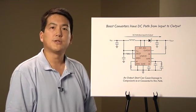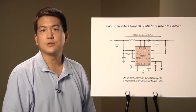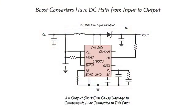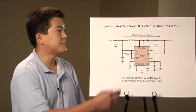These new parts also feature innovative fault protection features. In a traditional boost converter, a DC path exists between the input and output nodes. When a short circuit occurs on the output, the current in this path can increase uncontrollably and cause one or more components in this path to fail.